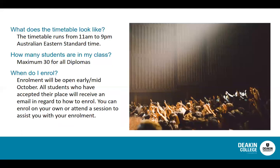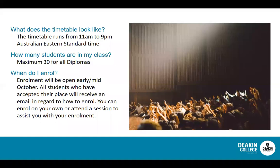Our units are timetabled to run in Australian Eastern Standard Time from 11am to 9pm. We've tried to move to that timetable to accommodate as many different students from different countries as possible — when on campus, our timetable would typically start at 9am, but at the moment we're accommodating as many time zones as possible. We keep our classes small at Deakin College — we see a lot of benefit in having fewer students with more class time and access to their teachers — so we have a maximum of 30 students in any particular class.